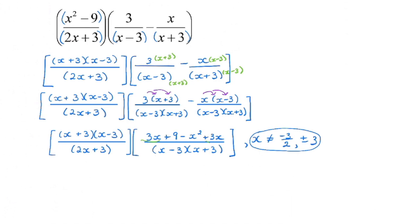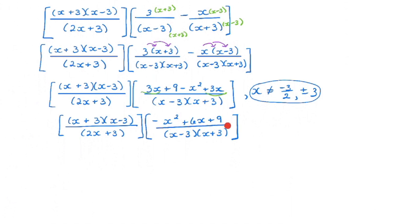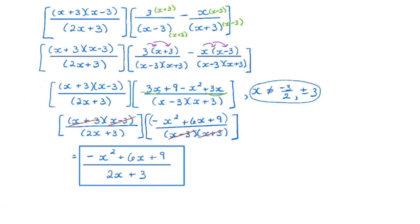Bring the second bracket together over the lowest common denominator, then distribute to get rid of brackets — watch the signs: negative times positive is negative, negative times negative gives a positive. I can see I've got a 3x plus a 3x, so combining those terms gives a trinomial. Bracket the trinomial and check if it factors: there's no greatest common factor, and no combination of factors of negative 9 adds to 6, so this is not factorable. Now we have both brackets fully simplified and we're multiplying, so multiply all numerators and all denominators, then cancel: x plus 3 over x plus 3 divides out, x minus 3 over x minus 3 divides out, leaving the trinomial over the remaining binomial as our final answer.